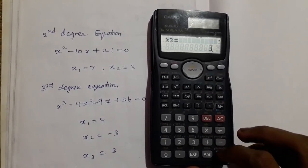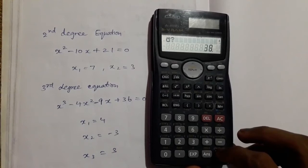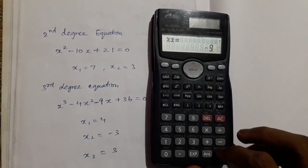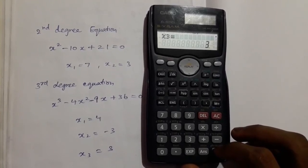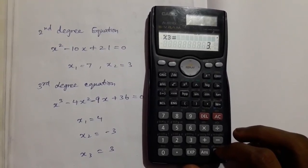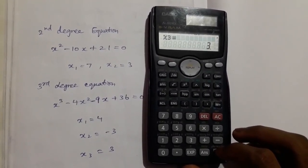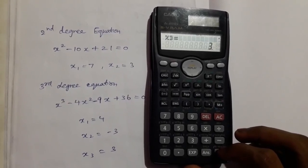x2 is equal to minus 3 and x3 is equal to 3. So this is our video about how to find 2nd degree equation and 3rd degree equation using 991ms calculator.